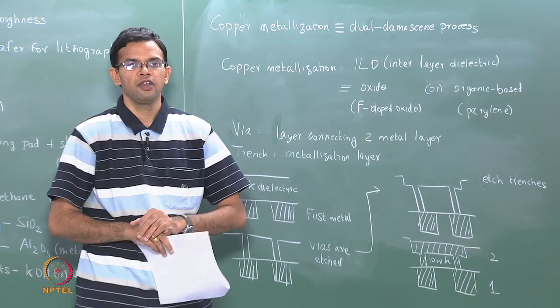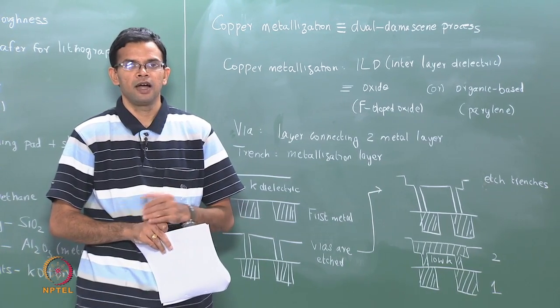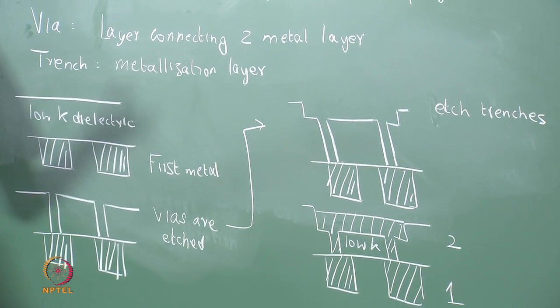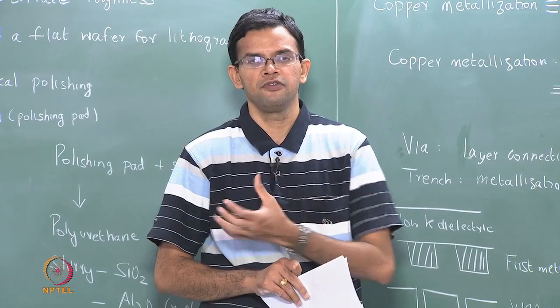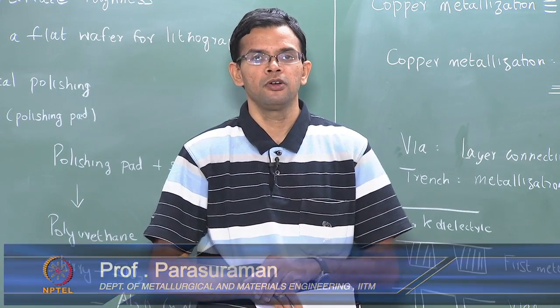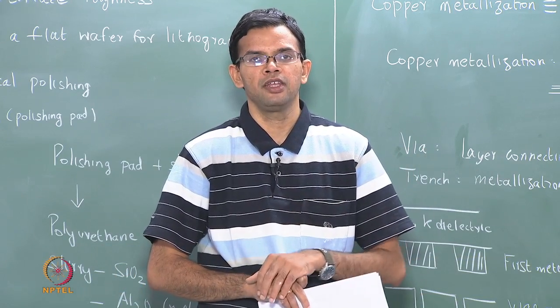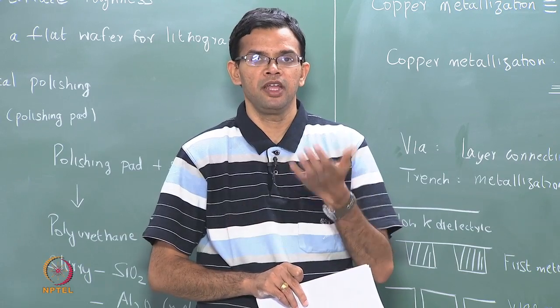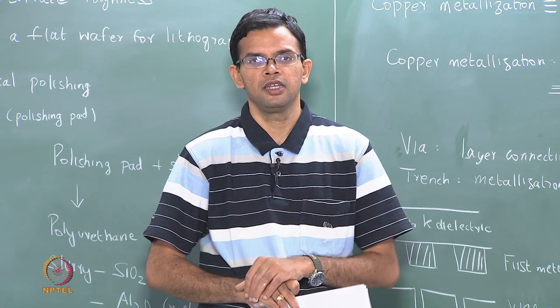So far we have looked at all the various steps involved in the fabrication of an IC device — starting with a blank wafer and going through a series of steps to give the final product. The next class we are going to look at how we actually evaluate the process: the various ways we can measure the process at various stages to make sure that everything is proceeding correctly.